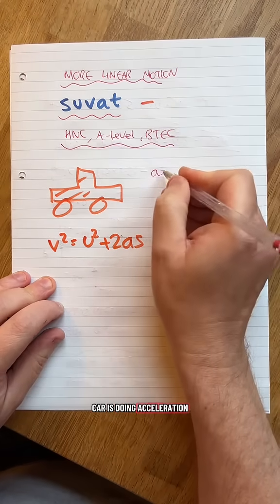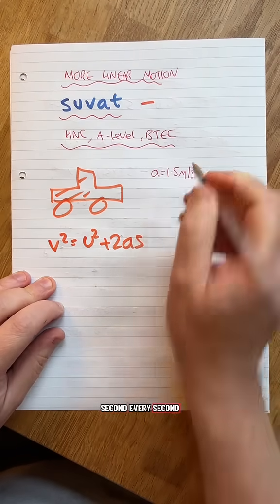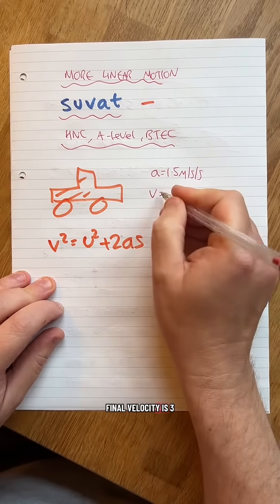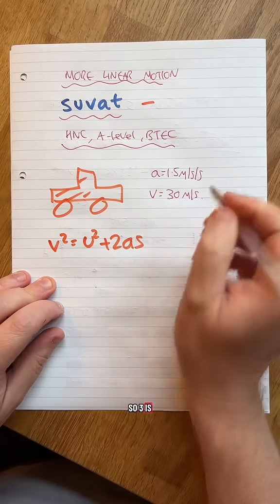Let's pretend my car is doing acceleration 1.5 meters every second every second. Let's pretend its final velocity is 3. So 30 is my final.